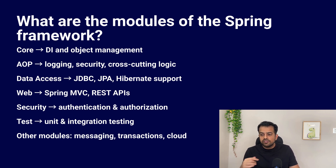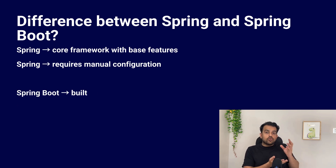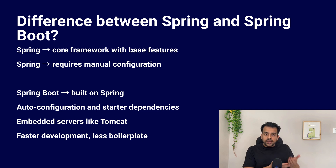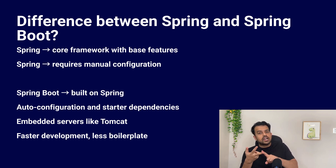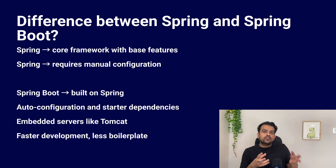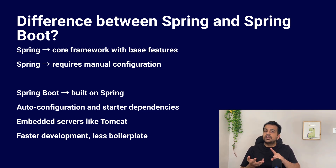Next question: what is the difference between Spring and Spring Boot? Spring is the main framework — it gives us core features like dependency injection, AOP, transactional support, data access, and the web layer. But with plain Spring, we have to do a lot of configuration ourselves: writing XML files, Java configuration files, configuring the server, and managing boilerplate code. That's why Spring Boot was introduced — it sits on top of Spring and makes using Spring very easy. It provides features like auto-configuration, starter dependencies, and an embedded server like Tomcat.